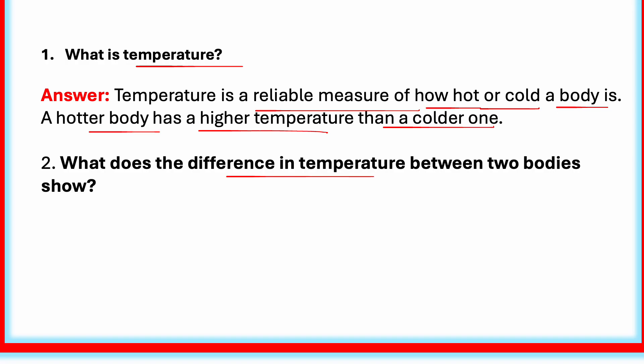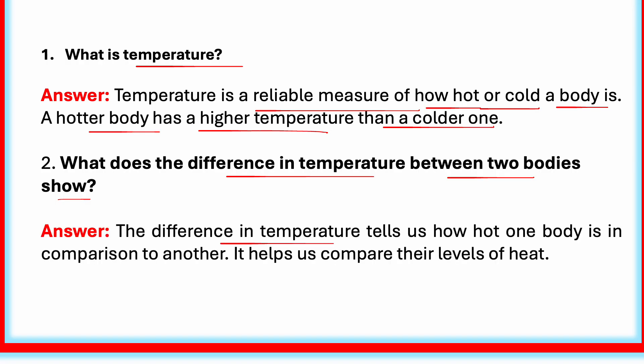What does the difference in temperature between two bodies show? The difference in temperature tells us how hot one body is in comparison to another. It helps us compare their levels of heat. By comparing their temperatures, we can tell which one is hotter or colder. For example, if the temperature of tea is 60 degree Celsius and that of water is 25 degree Celsius, then the tea is hotter. So, the difference in temperature tells us how hot one body is in comparison to another.